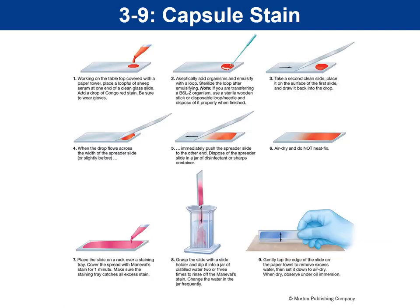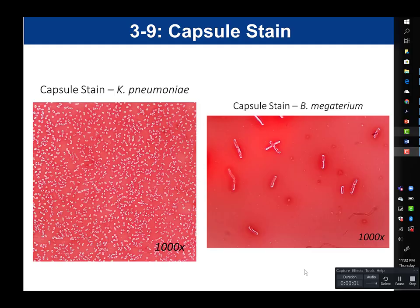The next slide visualizes how this procedure is done. These are what our slides would look like. We used two organisms: Klebsiella pneumoniae and Bacillus megaterium, both viewed at 1000x total magnification. Notice the difference in size — Klebsiella pneumoniae is very small relative to Bacillus megaterium. B. megaterium — mega meaning large — are very large bacteria.